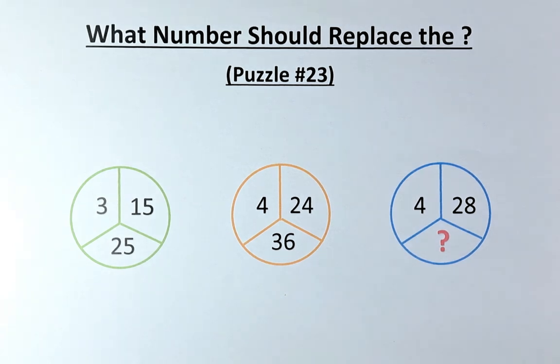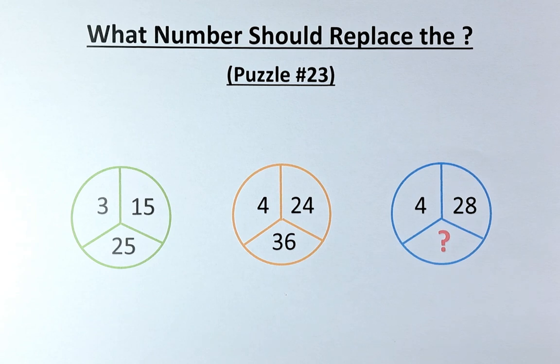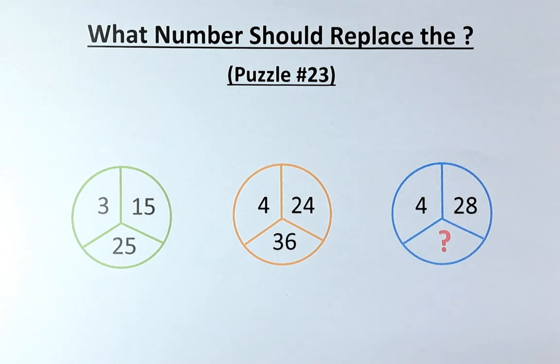Welcome back to the solution of puzzle number 23. What number should replace this question mark? The numbers in the circles are as follows. In the green circle, we have 3, 15, 25. Orange circle, 4, 24, 36. And in the last circle, we have 4, 28 and a question mark.